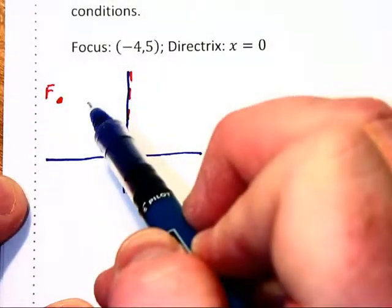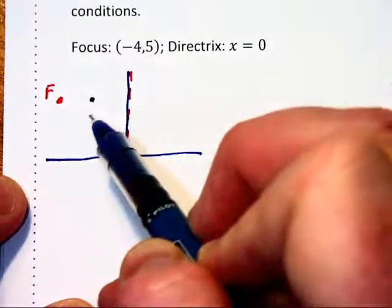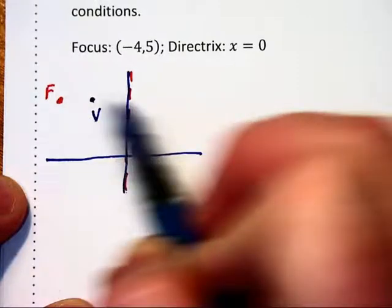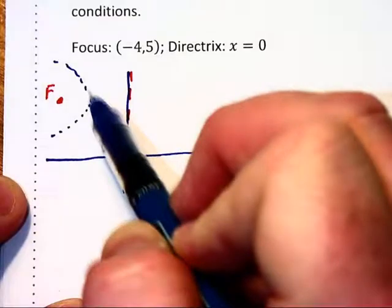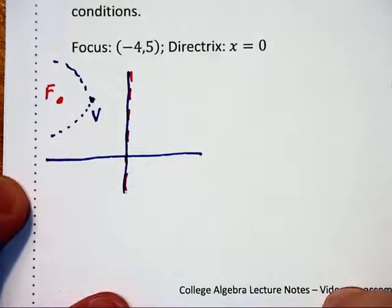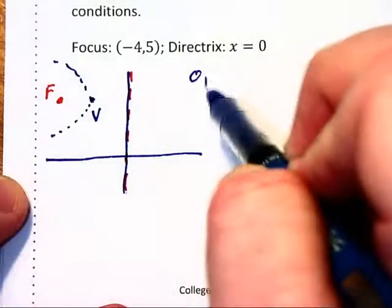By definition, the vertex is going to be halfway between the focus and the directrix. And since the taco shell wraps around the bean, we know this is going to open to the left-hand side.